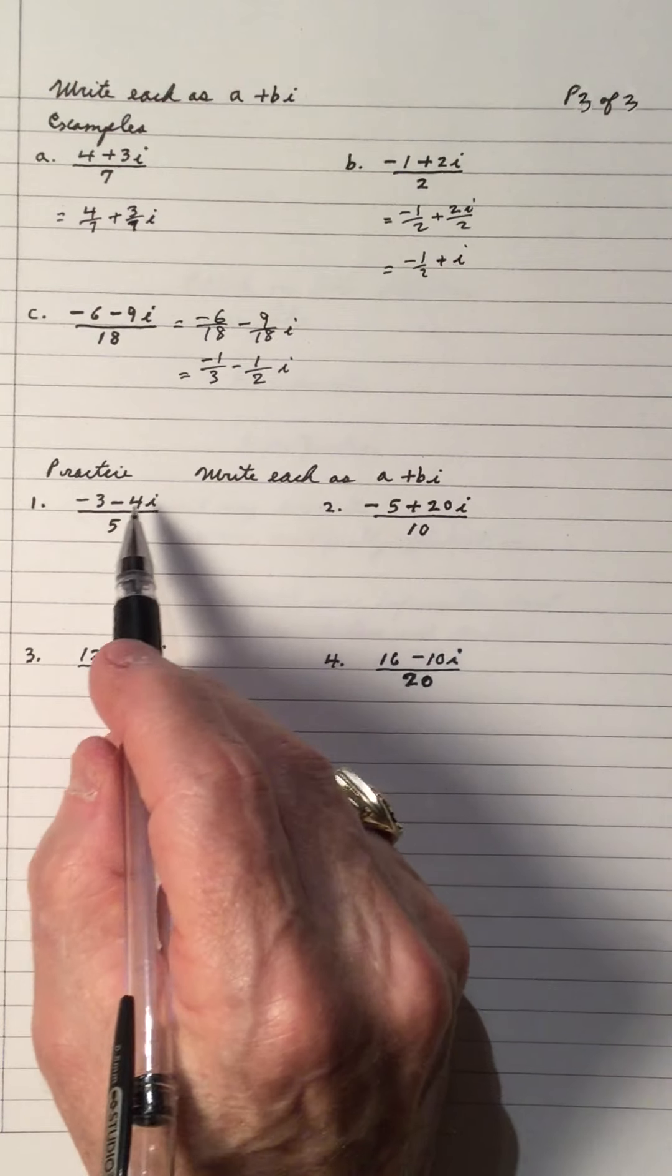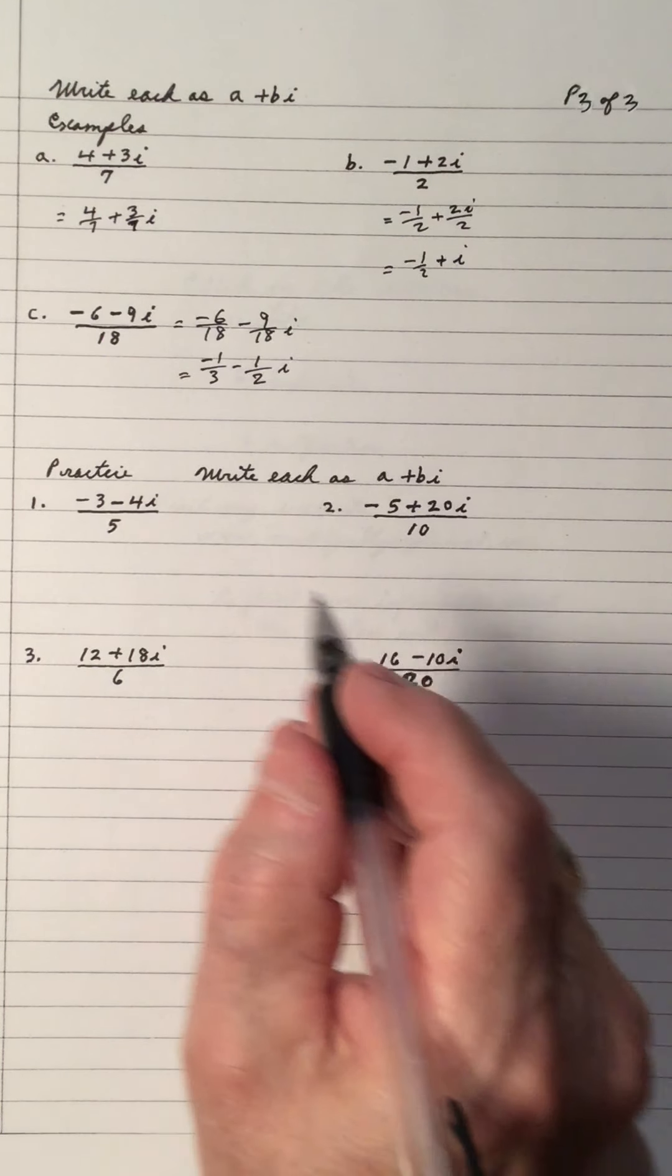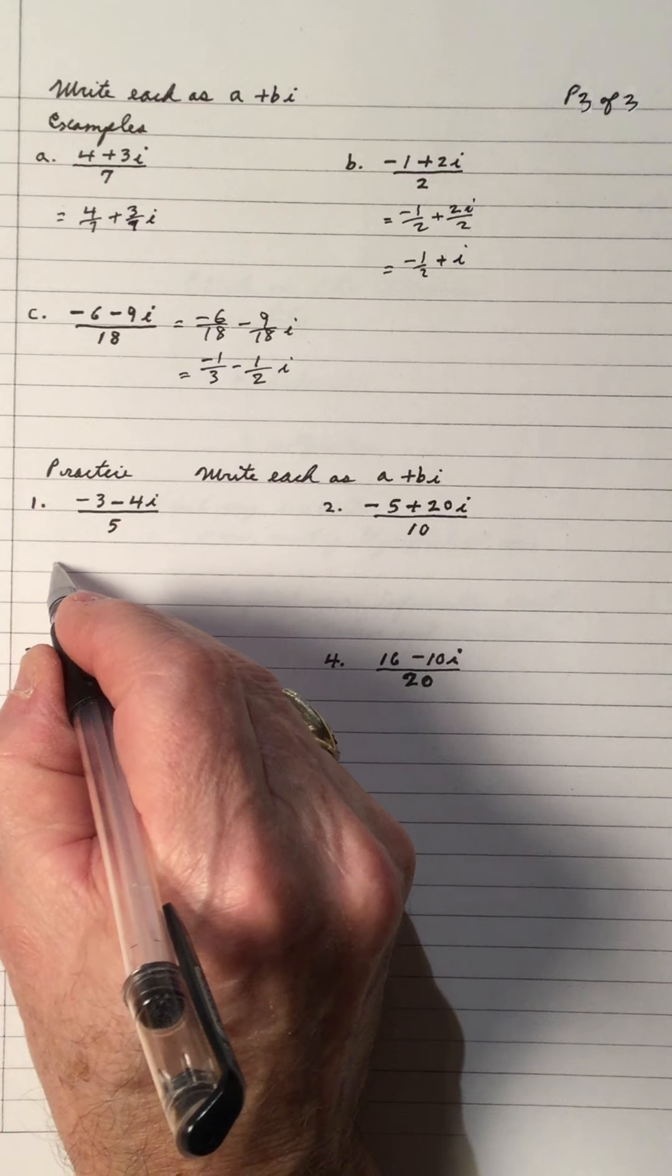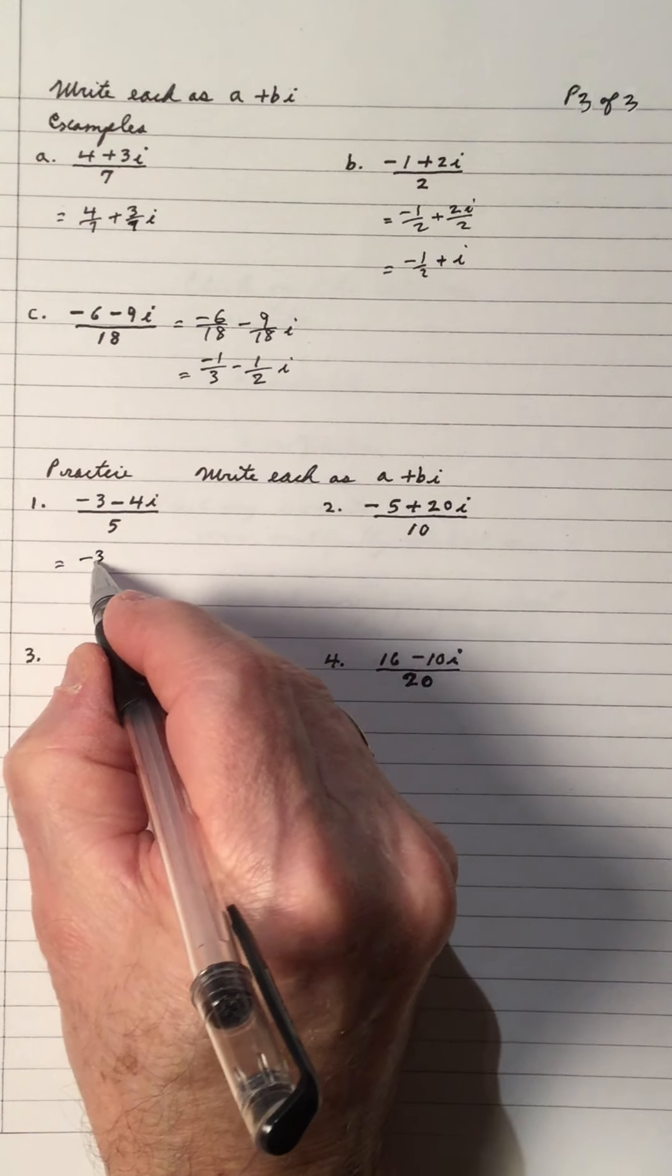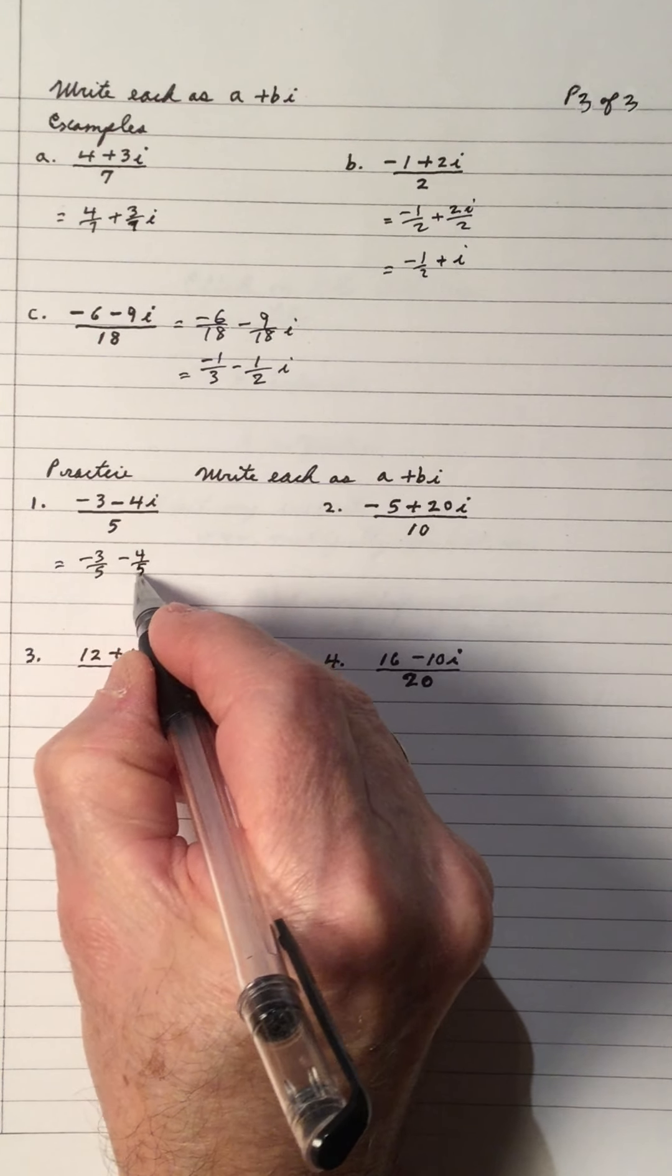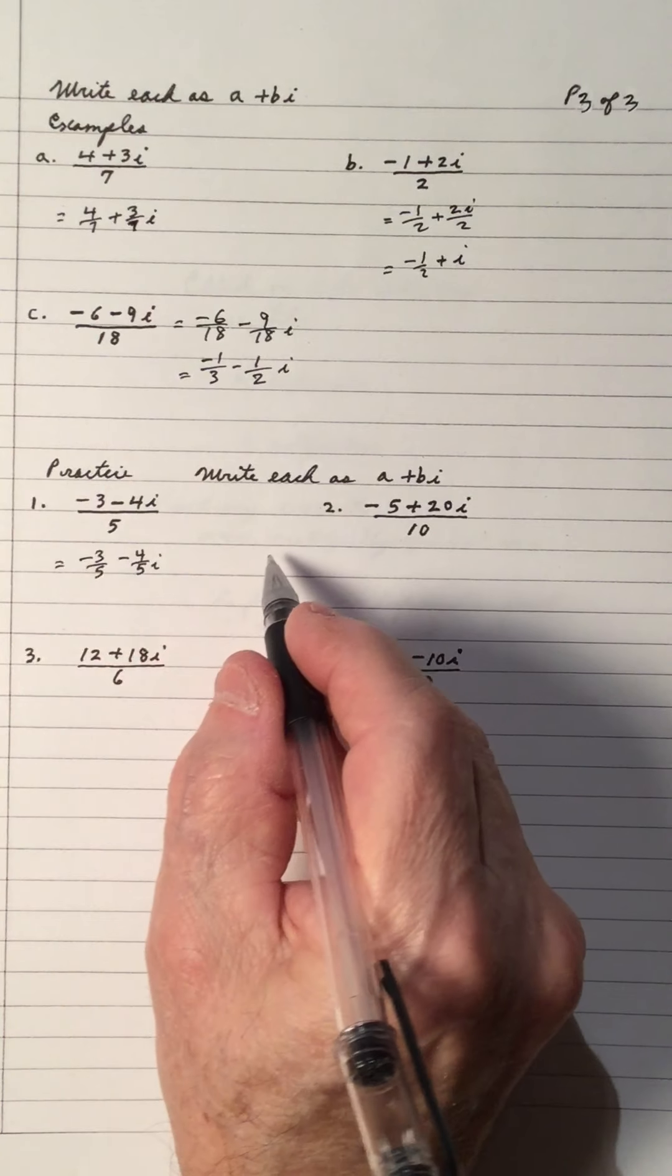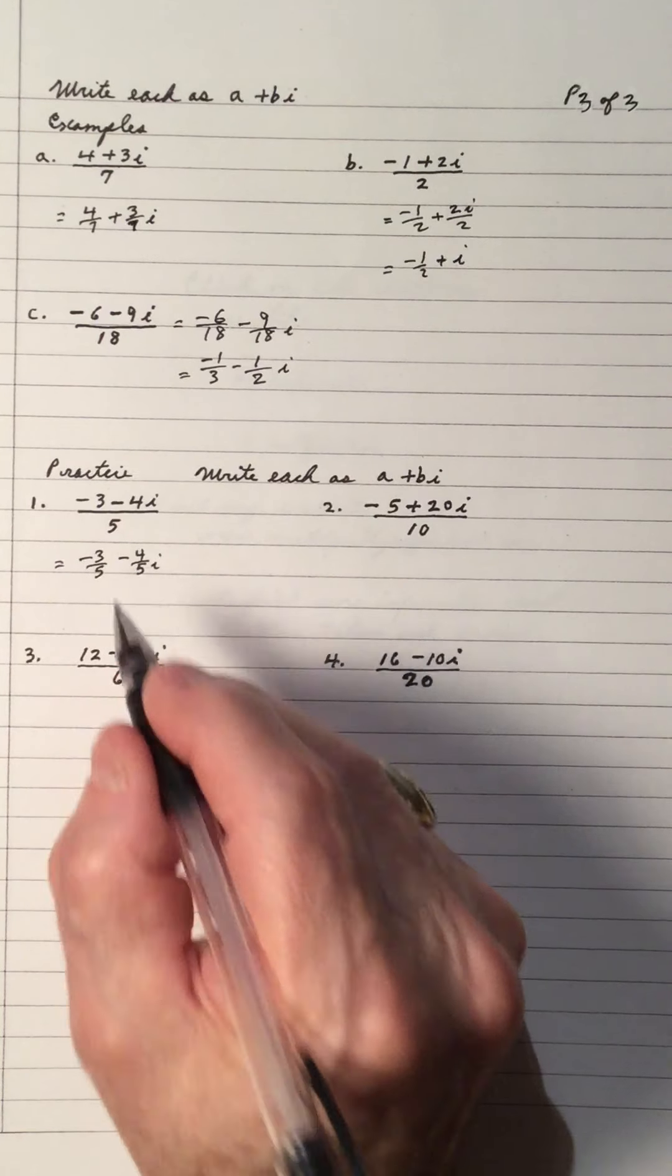So, if you're okay with it, try the 4 of these. Pause the video and work your answers out. So, here we go. So, negative 3 divided by 5. And the negative 4 is divided by 5. So, the 5 is divided into both of these to leave them as a real part and an imaginary part.